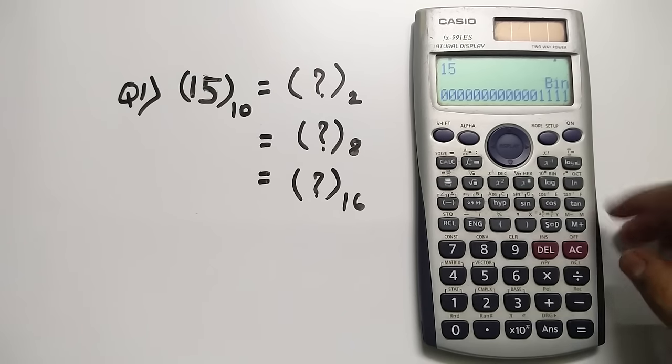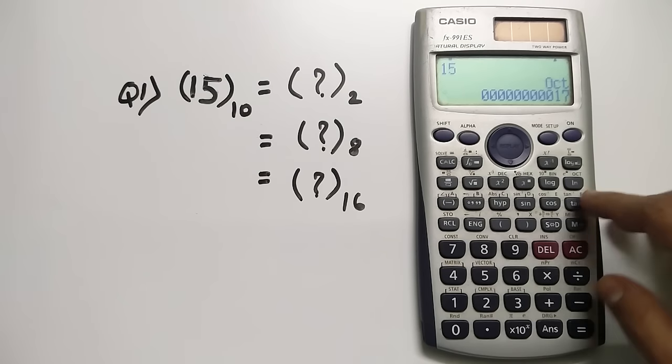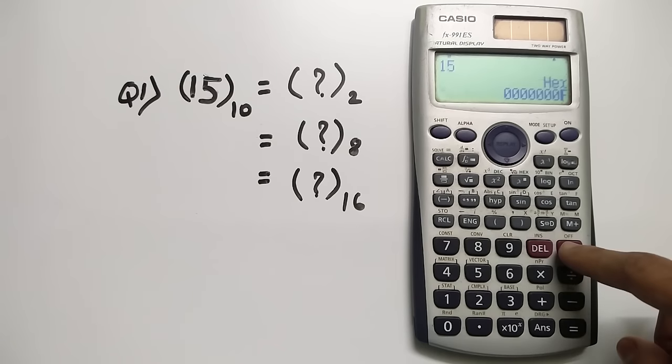Similarly if you want to change it to octal I'll click the octal button which is shown as OCT. So as you can see it is 17 in octal and the hexadecimal value would be F.